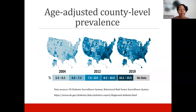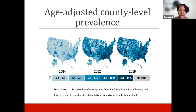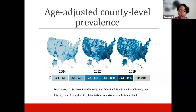This map shows an age-adjusted county-level prevalence of diabetes over the last several years. If you look at 2004 and move to 2019, you'll see the shaded area has become much darker — we've gone from a lower prevalence of diabetes to a greater percentage across the United States. Certain regions show that diabetes is more prevalent or on the rise in those communities.